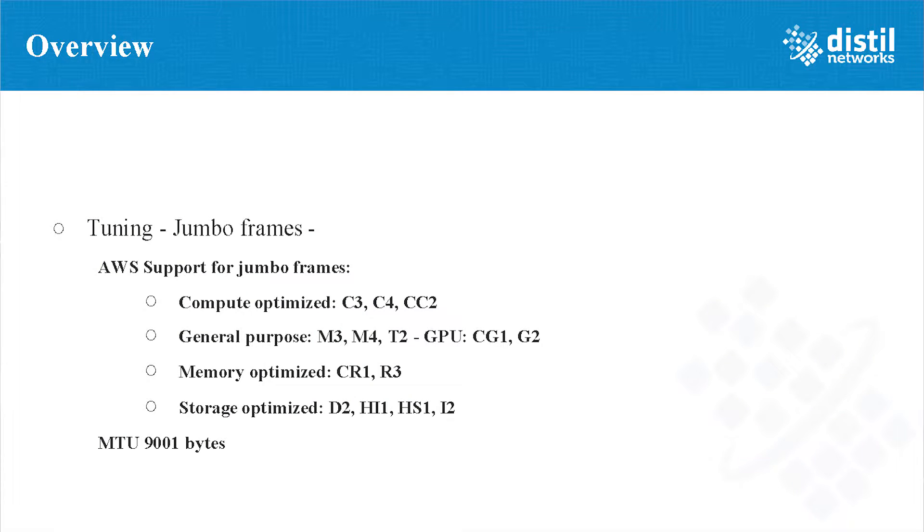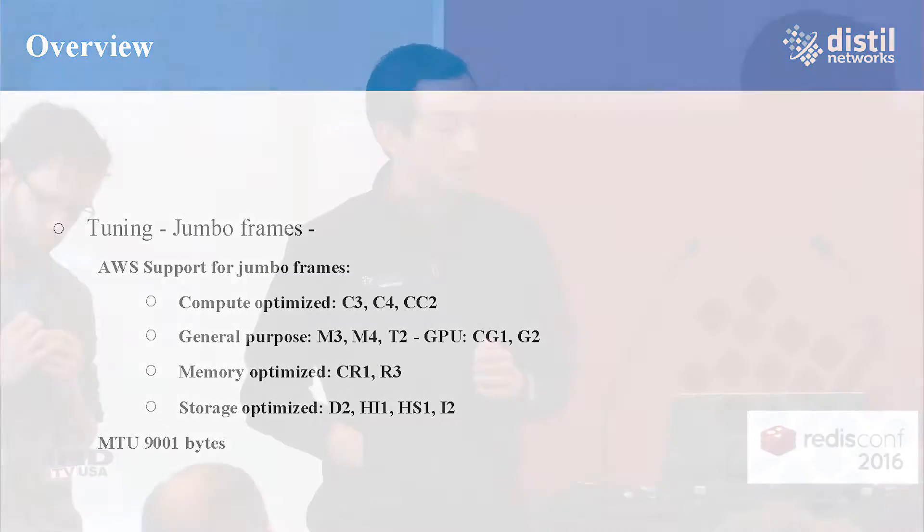In AWS, specific instance sizes support jumbo frames. Fortunately for us, C3 was among them — the M3 and M4 also support it — but it's important to check your environment. With C3s, the default MTU size is 9001 bytes, so we were good to go.